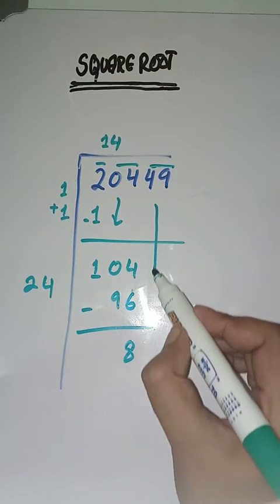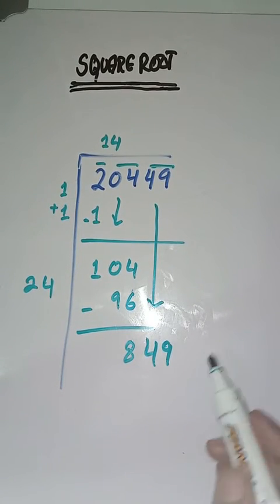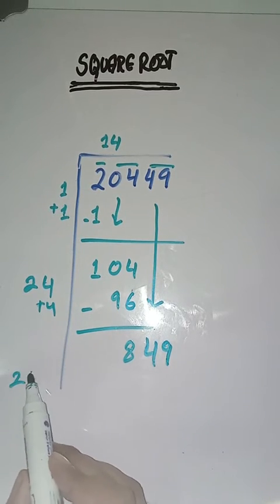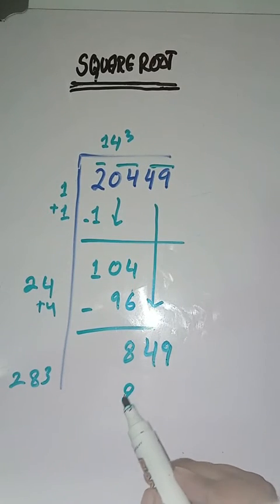And next pair हमारे पास 49. इसको हम नीचे ले आएंगे. So, 24 plus 4 is equal to 28. Now we will take 3. 283 threes are 849.